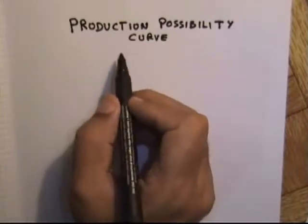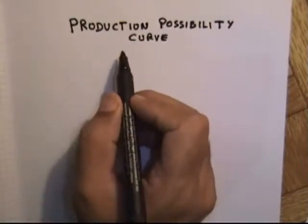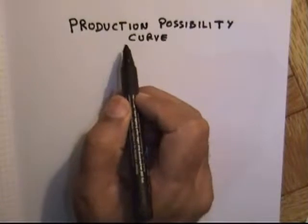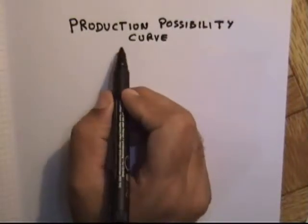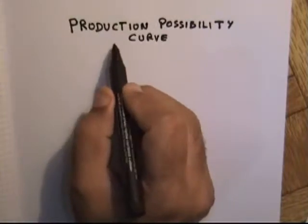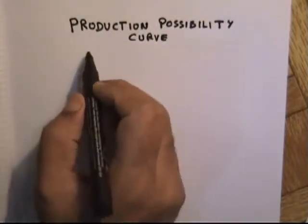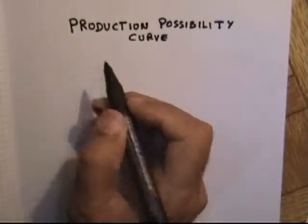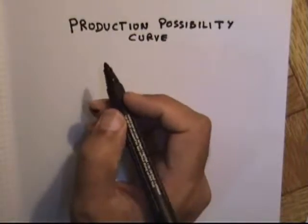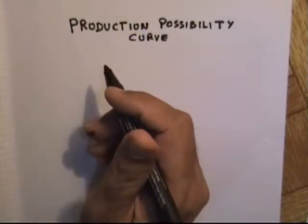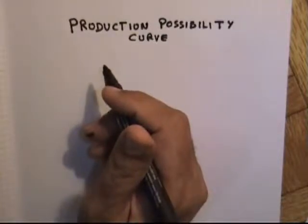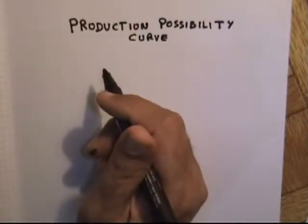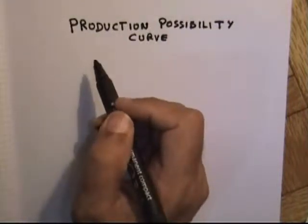In this lesson, I am going to explain about Production Possibility Curve, also known as Production Possibility Frontier and Production Transformation Curve. This is a model in business and economics that helps us explain how production of two goods can be determined by the allocation of scarce resources like labor and capital. This model also explains how mobilization of resources from one sector of the economy to another can affect production.